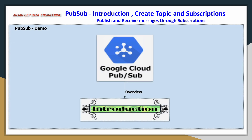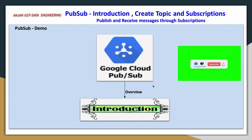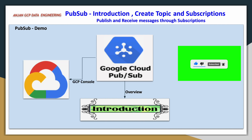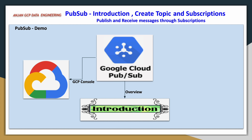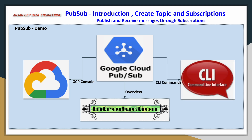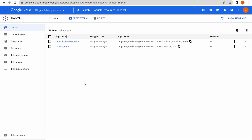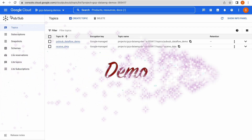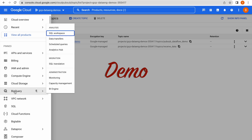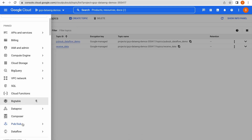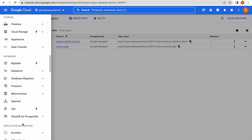In the demo, we will review how the PubSub console looks, create topics using the Google Cloud Console, publish some messages, create subscriptions, and also do the same tasks using the command line interface. Now let us move to the demo. This is the PubSub console — to find it, go to the navigation menu. PubSub is available under the Google Cloud Big Data stack, now renamed to Analytics.